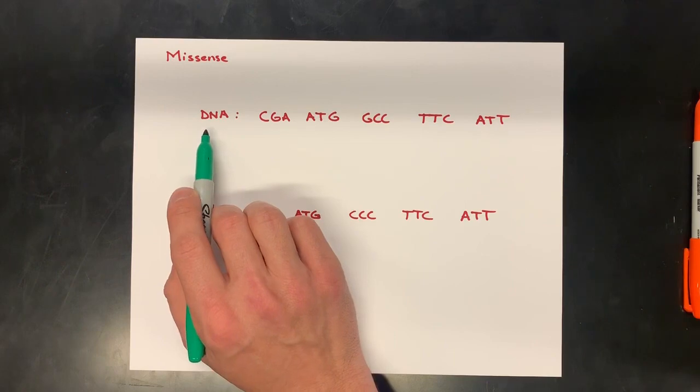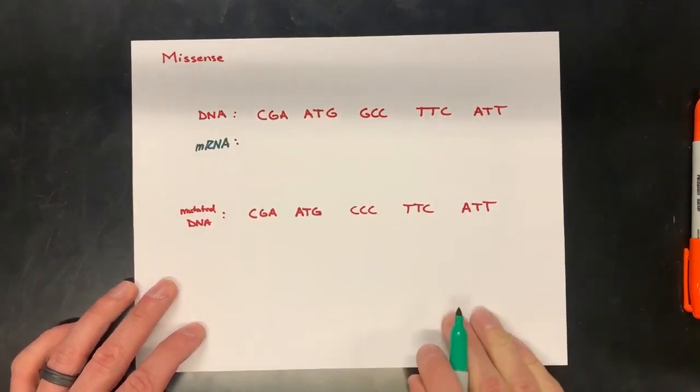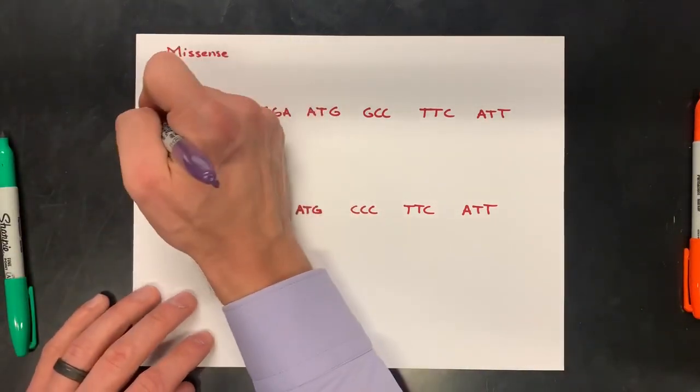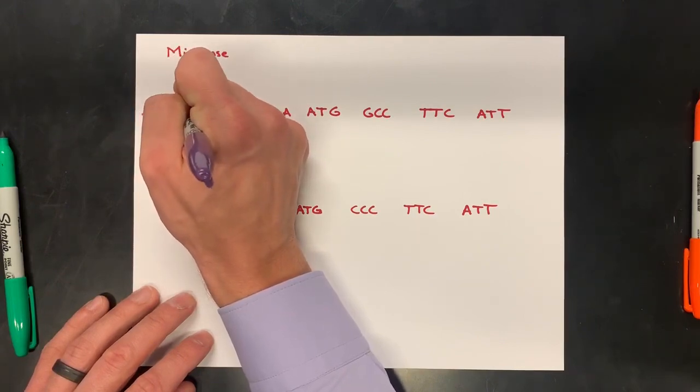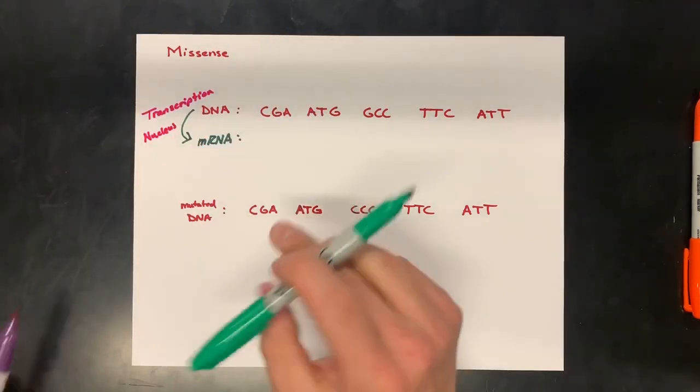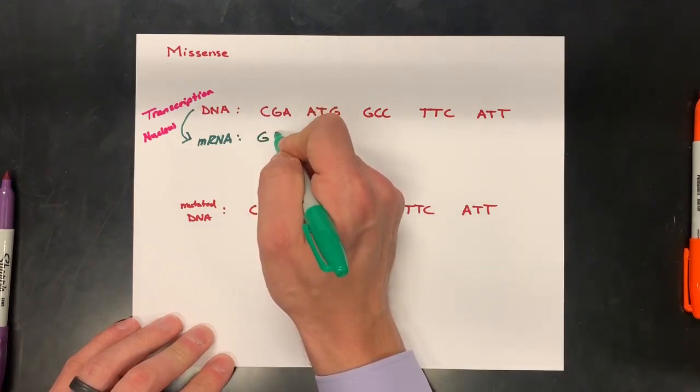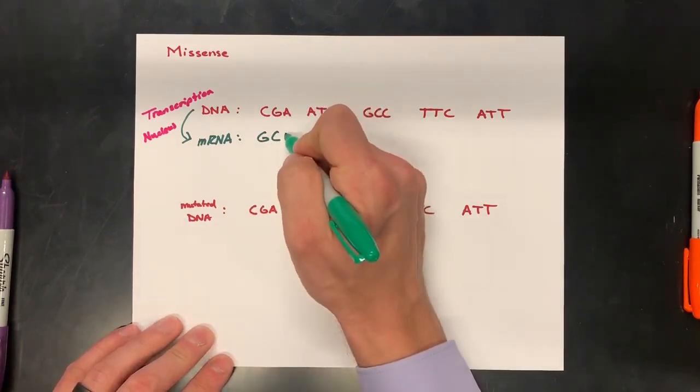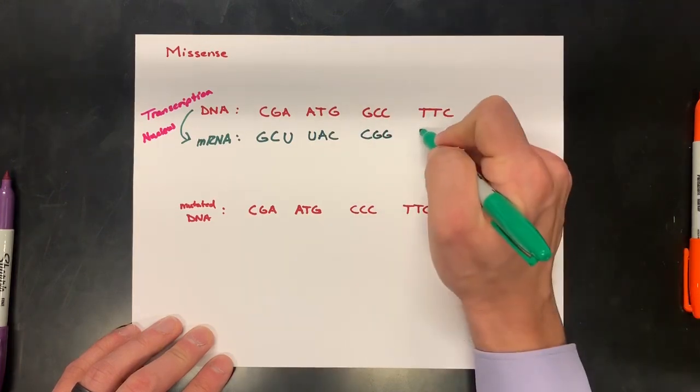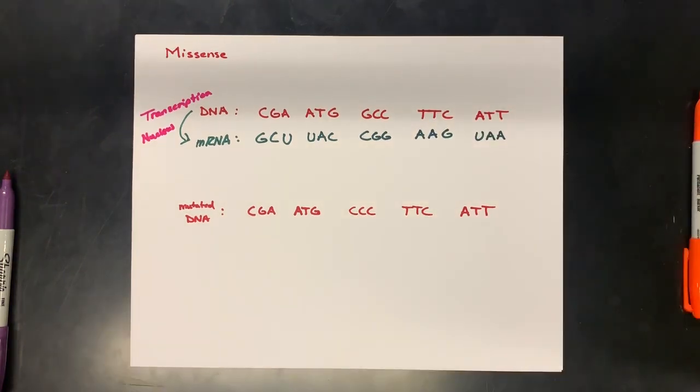If we are starting with DNA, we are going to first go to mRNA. The DNA going to mRNA, this is called transcription, and it occurs inside of our nucleus. If we want to do our base pairing rules, we're going DNA to RNA. The C is going to go to G, the G is going to go to C. The A, instead of going to T, it's going to go to U. And there is our sequence of mRNA.